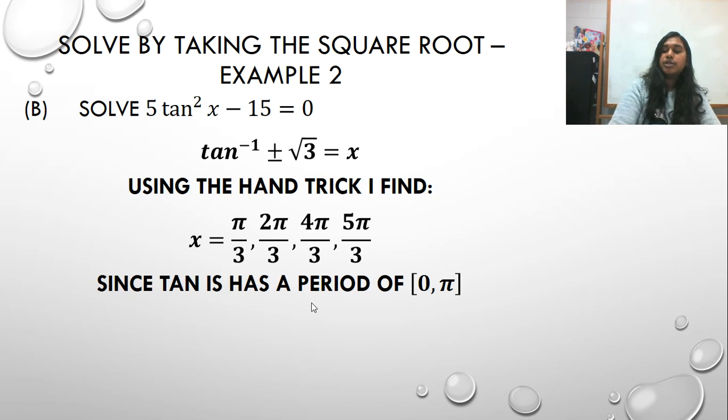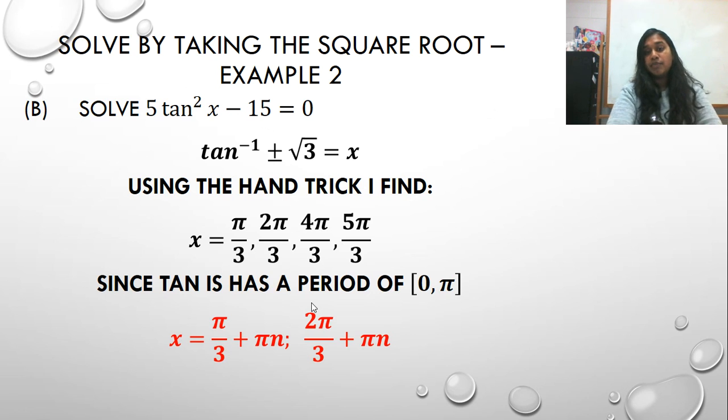But because I know I have a restricted tangent, I can get rid of my last two values, and I'm just left with this. Again, I don't forget to tack this on for coterminal angles.